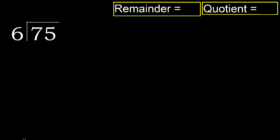75 divided by 6. 7 is not less, therefore with 7: 6 multiplied by which number is nearest to 7 but not greater? 6 multiplied by 2 is 12 — 12 is greater. 6 multiplied by 1 is 6. 6 is not greater. 7 minus 6 is 1.